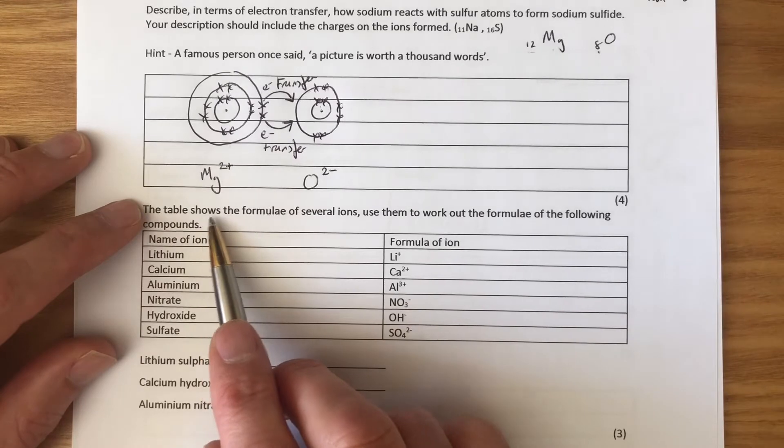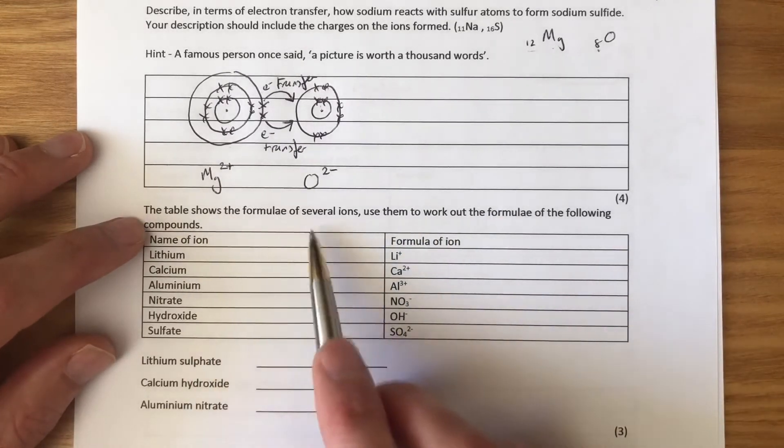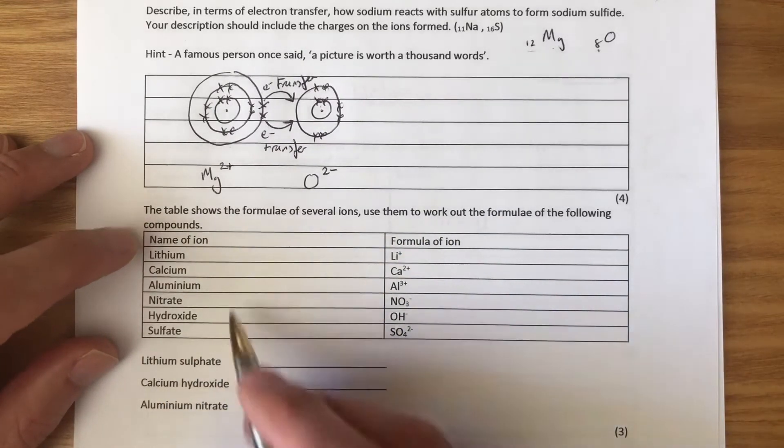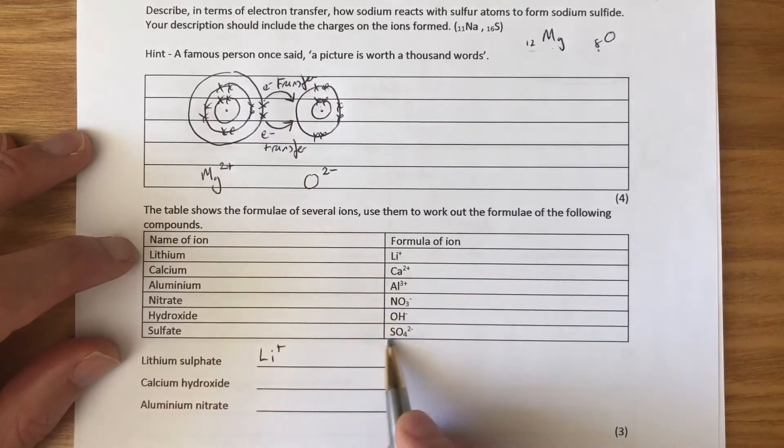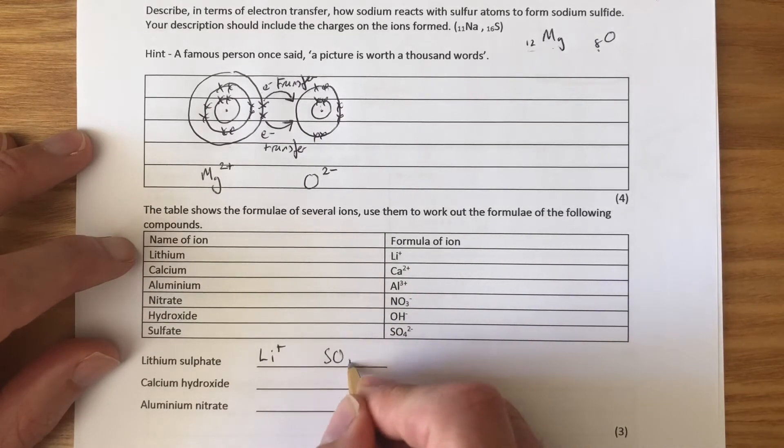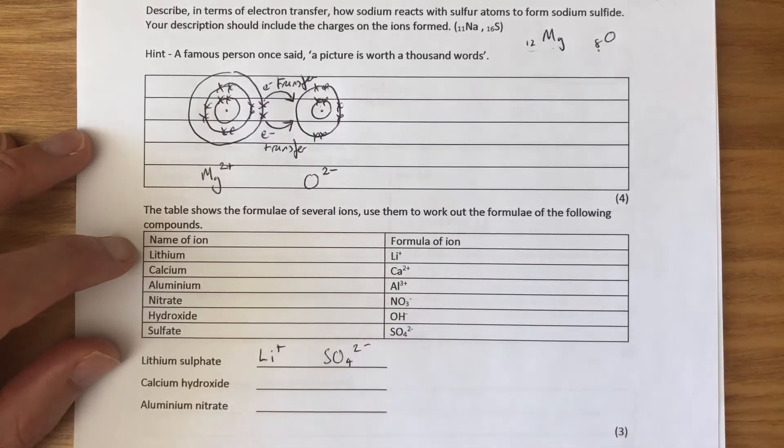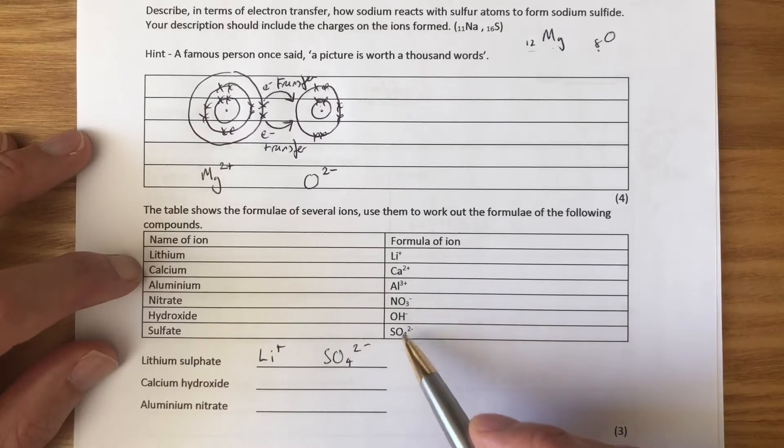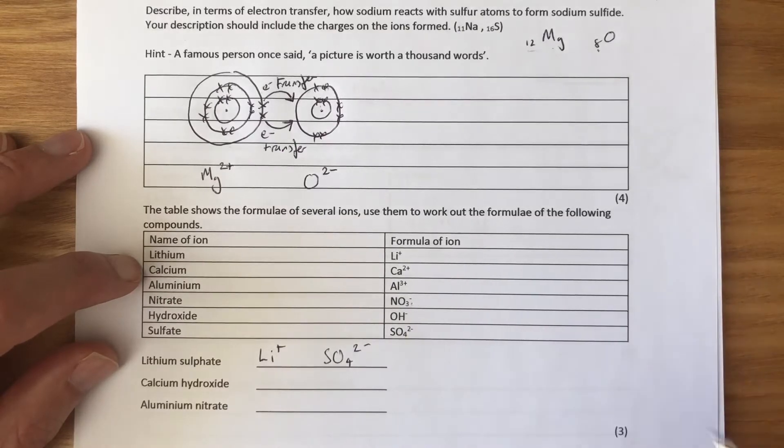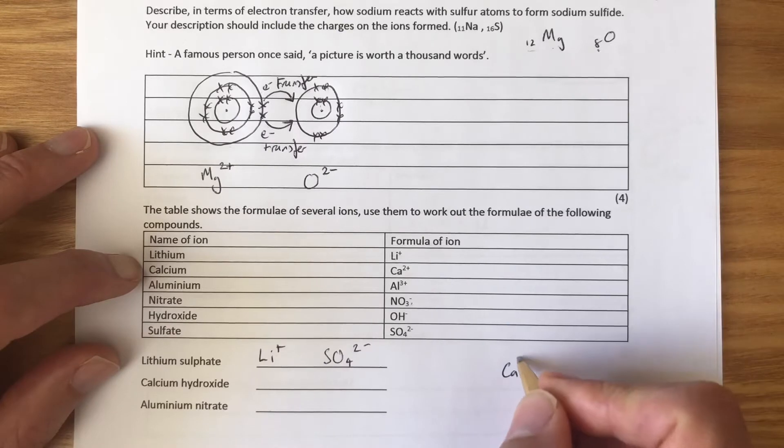The table shows the formulae of several ions. Use these to work out the formulae of the following compounds. We've got lithium sulfate. Find lithium here, it's Li+. And find sulfate here, it's SO4 2-. So, what we need to do is sort out a formula for those two. Well, let's not do lithium sulfate. I'll do calcium nitrate. So, if I was doing calcium nitrate, I'd write Ca2+ and NO3-.